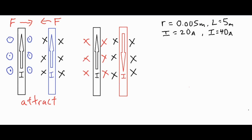Using the right-hand rule again: for the black wire, thumb upwards and fingertips into the screen, the palm faces to the left. For the red wire, thumb downwards and fingertips into the screen, the palm faces to the right — so this one is going to repel. Basically, any time two parallel wires have currents going in the same direction they attract, and if the currents go in opposite directions they repel.